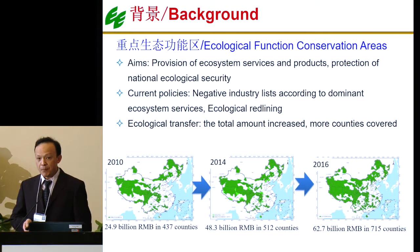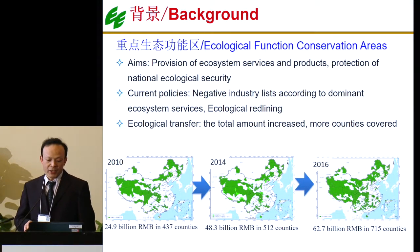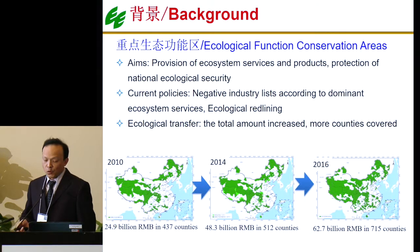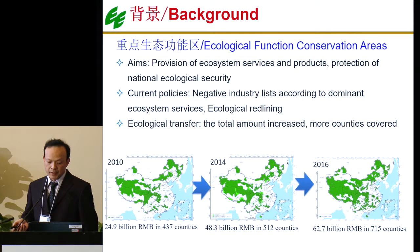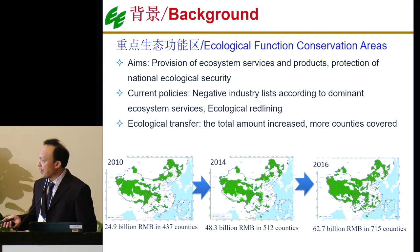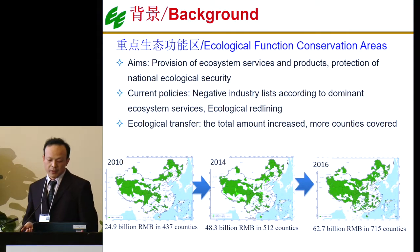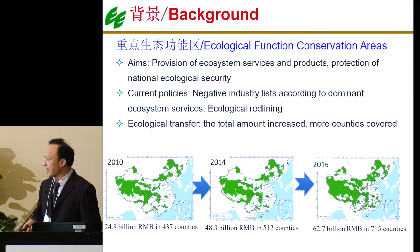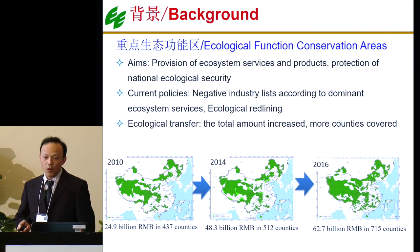The efficacy area also has a high proportion of protected areas — we call them ecological redline areas. Based on the performance of ecological protection, the central government has transferred a large amount of money to those areas, and the total amount of transfer has increased over the years. For example, in 2010 the total transfer was 24.9 billion renminbi yuan, and last year, 2006 [2016], the total amount was 62.7 billion yuan, so basically one county will get about 0.1 billion yuan.